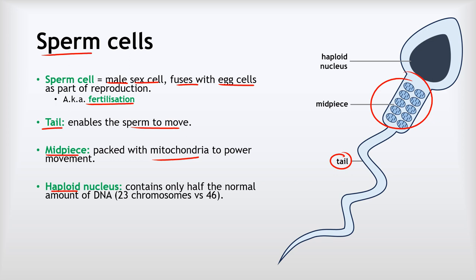Again, we've got a haploid nucleus, so we've only got half the normal amount of DNA — 23 chromosomes rather than 46. That means that when the 23 chromosomes of the sperm cell fuse with the 23 chromosomes of the egg cell, we make a normal cell with the full set of 46 chromosomes. That's why half your DNA comes from your biological mother and half from your biological father.